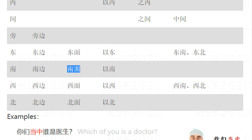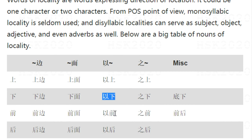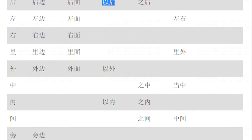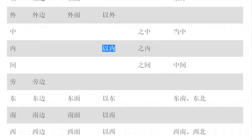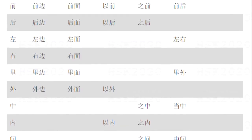The third category uses the character 以 plus a locality. 以上 means above. 以下 means following. 以前 means before. 以后 means after — from a time point of view. Then 以外 means from here outside. 以内 means inside. 以东 means from here to east. 以南 from here to south. 以北, 以西.